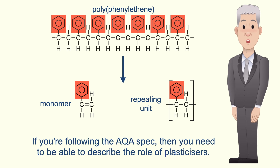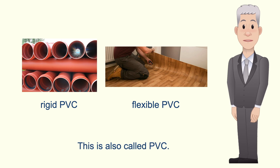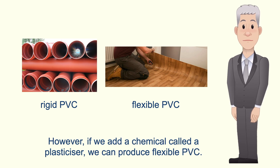If you're following the AQA spec, you need to be able to describe the role of plasticizers. We've already seen the polymer polychloroethene, also called PVC. PVC is a rigid polymer that's used to make plastic pipes among other products. However, if we add a chemical called a plasticizer we can produce flexible PVC.